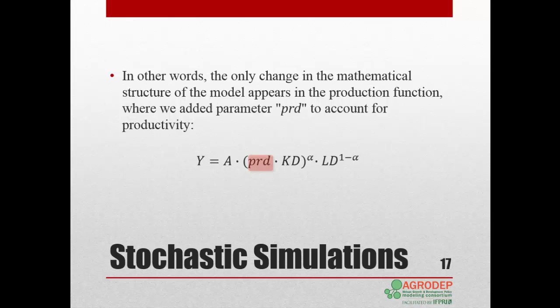To reflect these assumptions, the only change we will make in the mathematical structure of the model is to multiply the capital demand variable, KD, in the production function by a new parameter, prd. So now, the Cobb-Douglas function from Lesson 8 will read Y, output, is equal to A, a scale parameter, times prd, times capital demand KD, both raised to the power alpha, times labor demand LD, raised to the power 1 minus alpha.